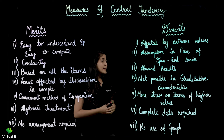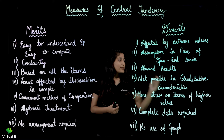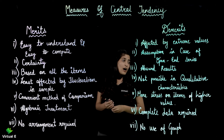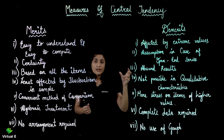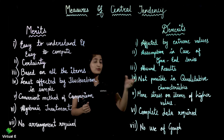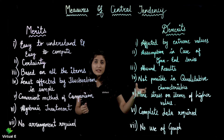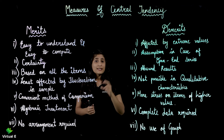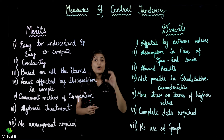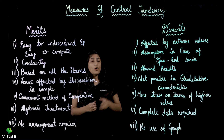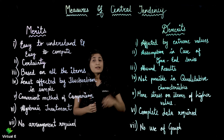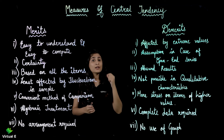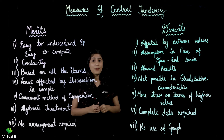The next demerit is not possible in qualitative characteristics. If you are asked to find the mean of intelligence data, or the mean of honesty, it is not possible. Because these are all qualitative characteristics, and mean can only be used to calculate quantitative data — that means numbers.